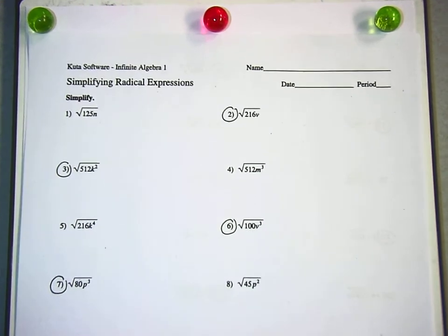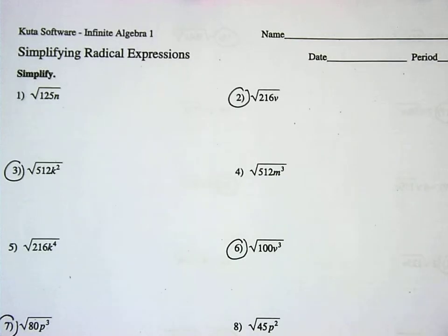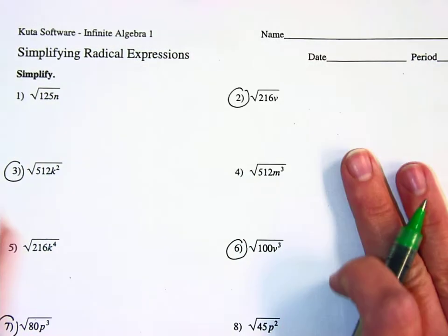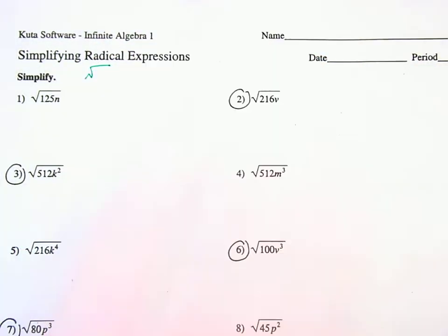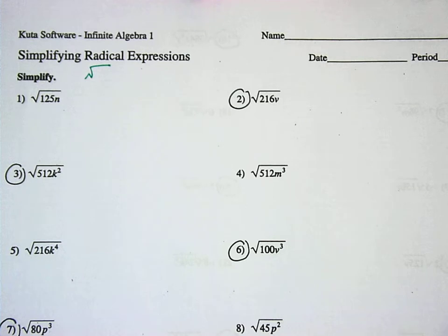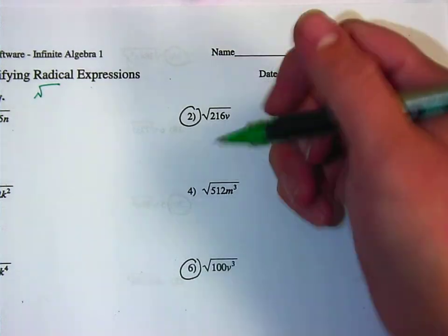Welcome to today's lesson about simplifying radical expressions. Radicals are another word for a square root. Your homework today is to do all the circled problems on this worksheet, which is 14 of them. Instead of a normal lesson where I do examples then you do homework, I'll pick about four that we'll do together, and your homework is to do the rest of the circled ones.